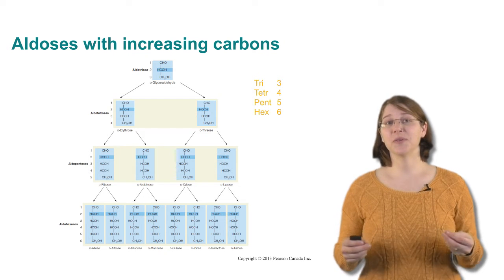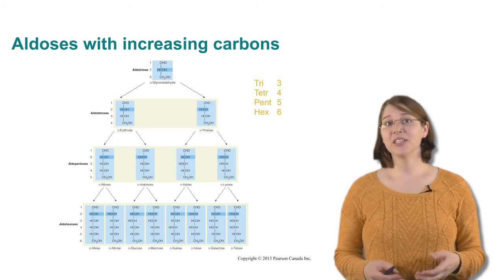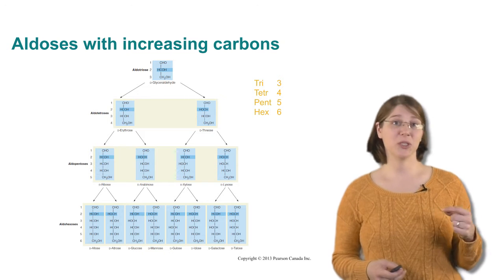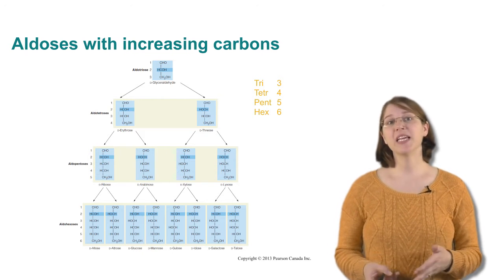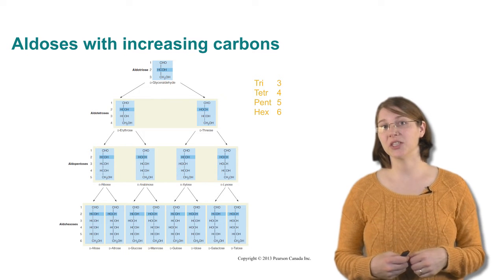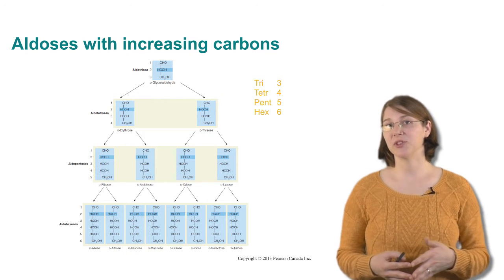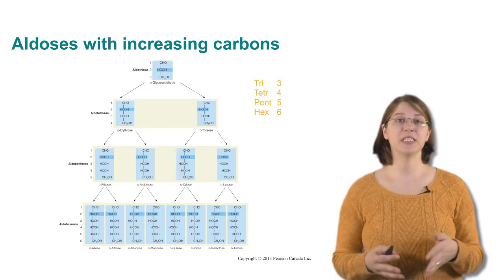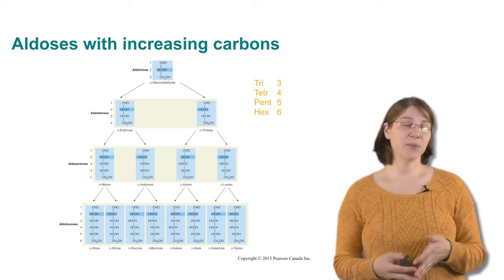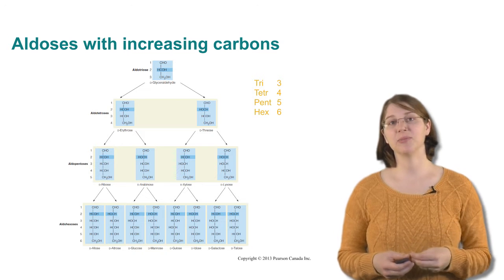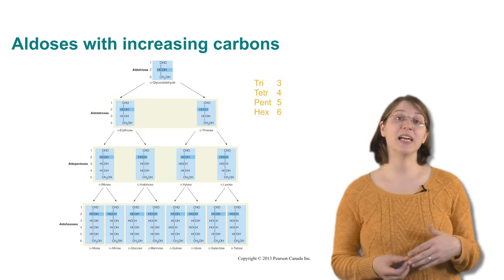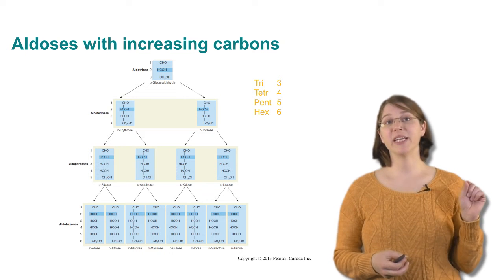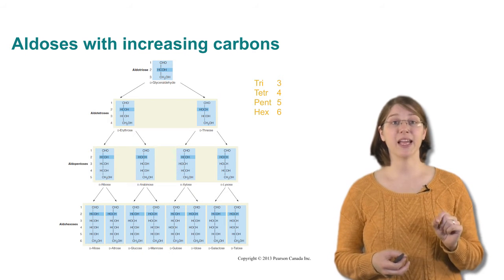Sugars have a huge variety of structure. And so here you can see that when we have a three carbon sugar, there's only one possible structure. But when we get down to having a six carbon sugar, there are many possible structures that all have distinct chemical properties. And when we talk about sugars, we talk about sugars being D sugars. D sugars have the second to last carbon with that OH group on the right hand side.